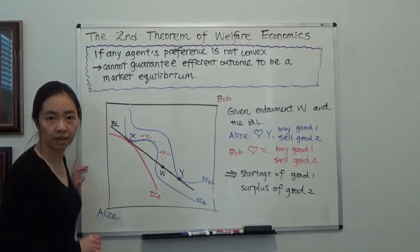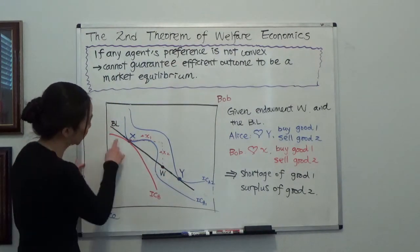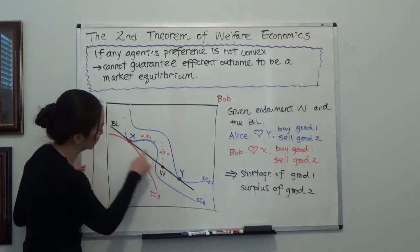I'd like to move to point x. But Alice will say, I prefer to move to point y. So why is that? You can see clearly, given this budget line,